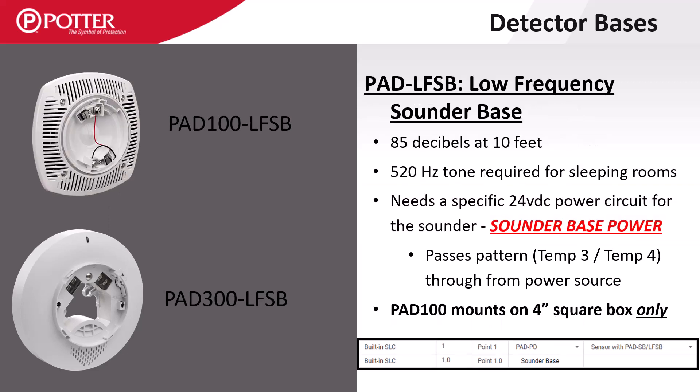The PAD LFSB is a 520Hz version of the sounder base. The 100 series LFSB can only mount on a 4 square box since it recesses back into the box, while the 300 series has several mounting options since it has no protrusion.